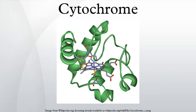Within each class — cytochrome A, B, or C — early cytochromes are numbered consecutively, for example cytochrome C, cytochrome C1, and cytochrome C2.